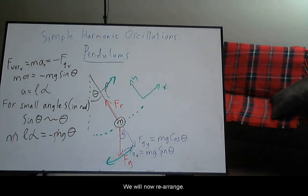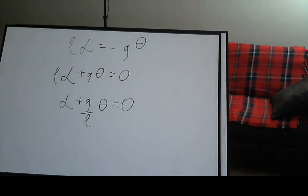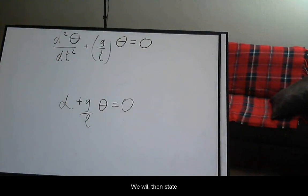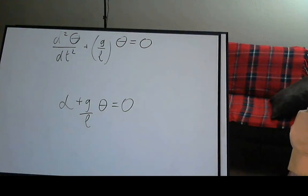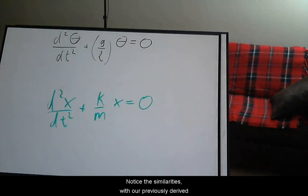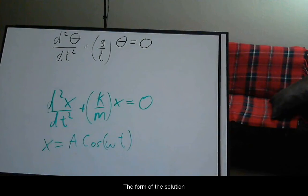We will now rearrange. We will then state our equation of motion in its differential form. Notice the similarities with our previously derived equation of motion for a simple harmonic spring oscillator. The form of the solution must be similar.